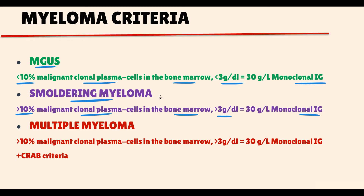In both monoclonal gammopathy of unknown significance and smoldering multiple myeloma, the production capacity of malignant plasma cells remains insufficient to cause severe injury to other tissues in the organism. Thereby, at these two stages, typical symptoms will be absent.